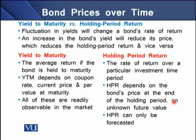What is the relationship between yield to maturity and holding period return? Fluctuations in yields change a bond's rate of return: an increase in a bond's yield reduces its price, which reduces the holding period return, and vice versa. Yield to maturity is the average return if the bond is held until maturity, whereas holding period return is the rate of return over a particular investment time period. YTM depends on coupon rate, current price, and par value at maturity. Holding period return depends on the bond's price at the end of the holding period, which is an unknown future value.